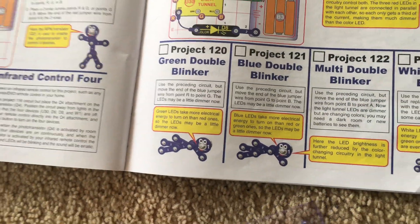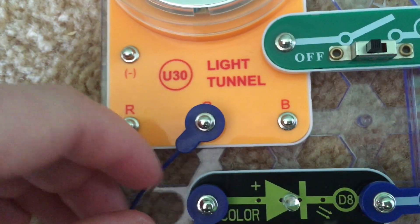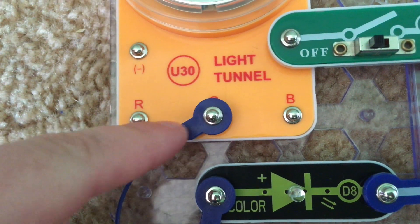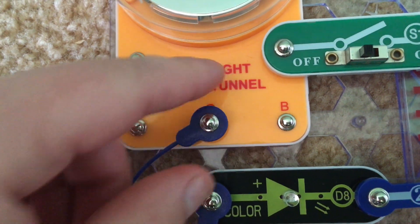120 green double blinker. I moved the end of the blue wire from the R point to the G point on the light tunnel and now only the green LEDs come on.